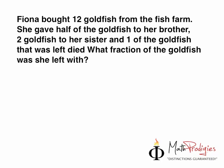The question was: Fiona bought 12 goldfish from the fish farm. She gave half of the goldfish to her brother, two goldfish to her sister, and sadly, one of the goldfish died. What fraction of the goldfish was she left with?